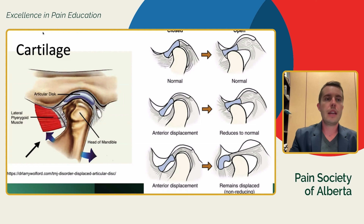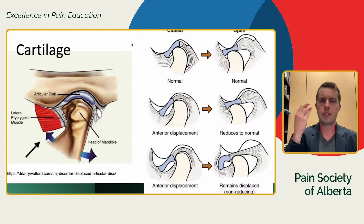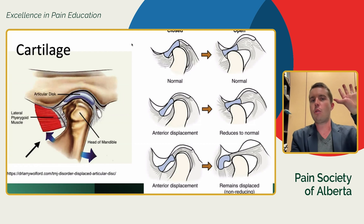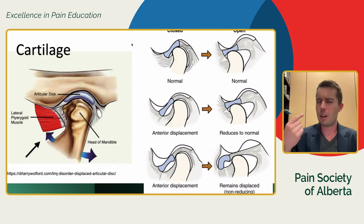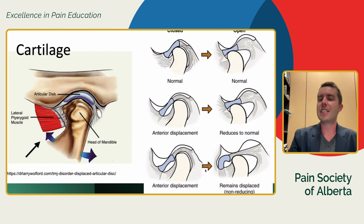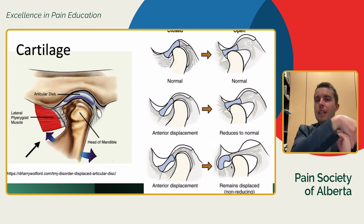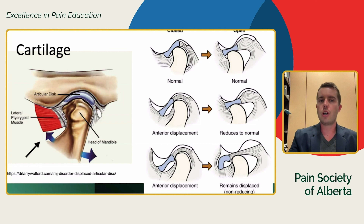Some people unfortunately go on to develop jaw locking — specifically closed lock, where you can only open maybe a third or a half of normal, and it usually hurts. The disc gets stuck, folds up on itself, and limits opening. For anyone dealing with clicking, popping, or locking of the jaw, it's this cartilage disc that's probably creating the issue.